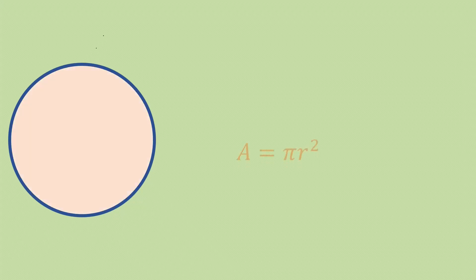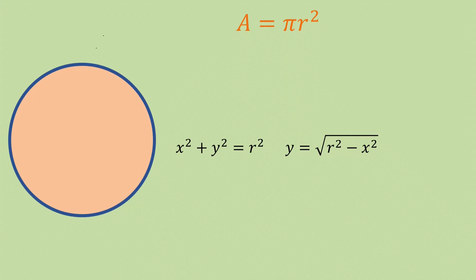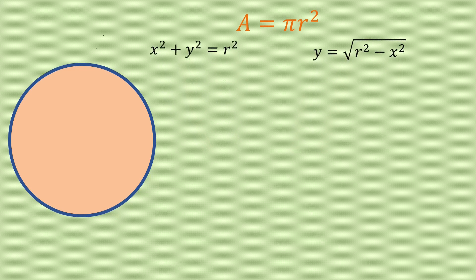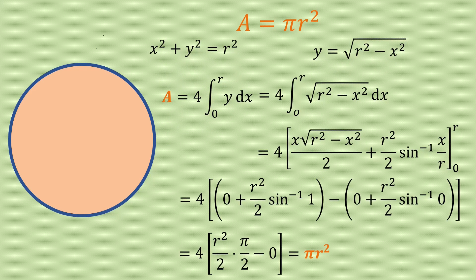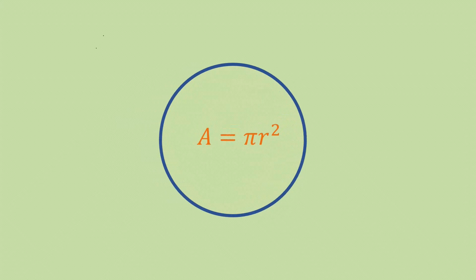We all know the shape of a circle — it's one of the shapes we see in our day-to-day life. If I were to ask you to calculate its area, you would probably use the equation of a circle and the tool of calculus. However, mathematicians of older days didn't know about calculus, but they did know that the area of a circle is pi times the radius squared.